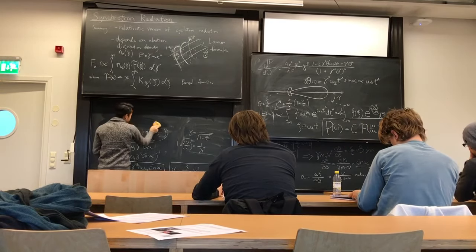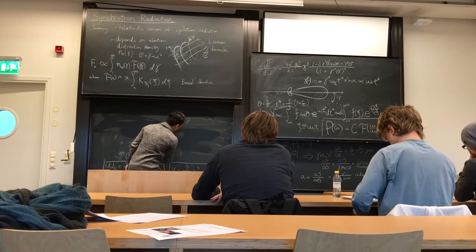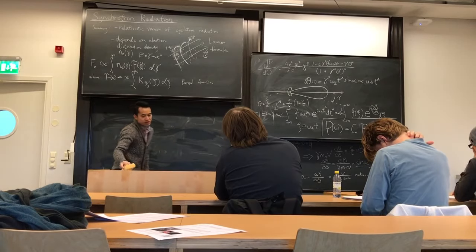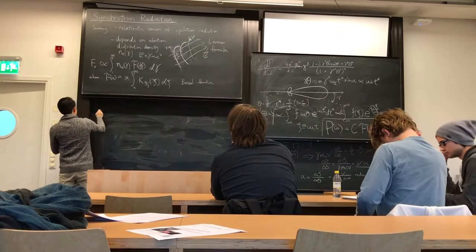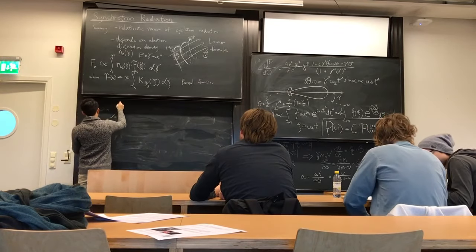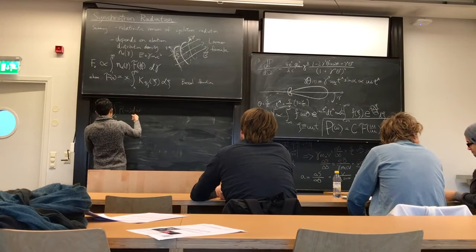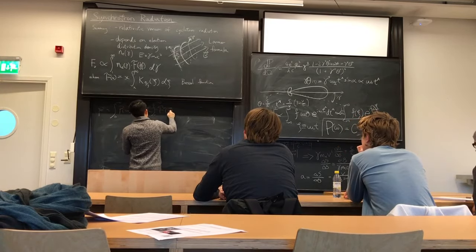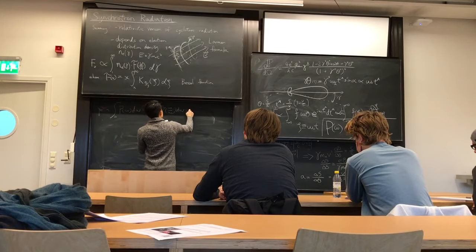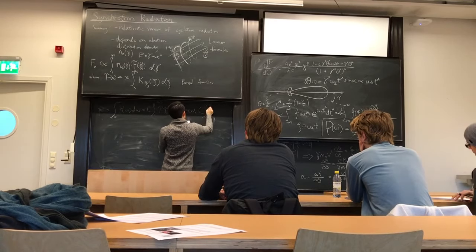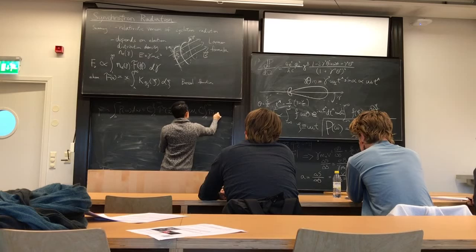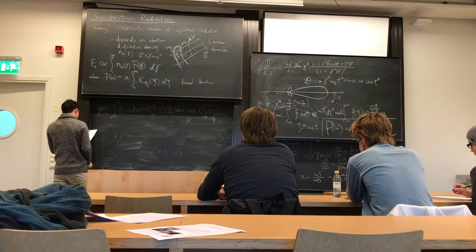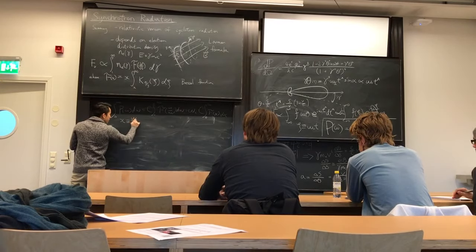To find the constant C, we integrate P(omega) over omega and compare. Setting x equals omega over omega_c, we integrate 0 to infinity C times omega_c times the function squared times x dx. The total power is known: 2e squared times B squared times gamma squared times beta squared over 3 times mass of electron squared times c cubed, times sine squared beta.